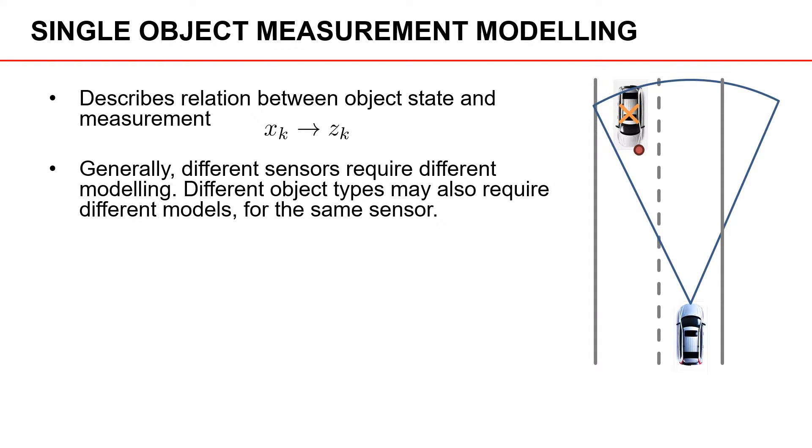In general, depending on the type of sensor that is used and the types of objects that we are tracking, we will require different types of single object measurement models. So there's not a single measurement model that can always be used regardless of what type of sensor you're using or the type of targets that you're tracking.